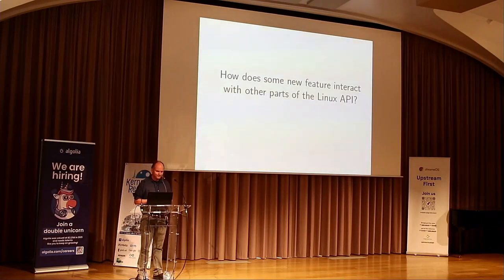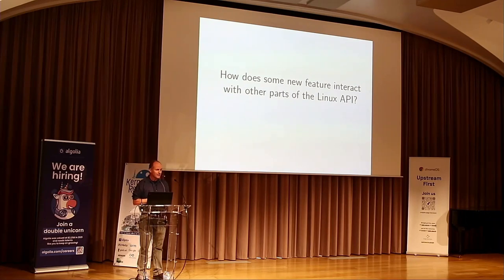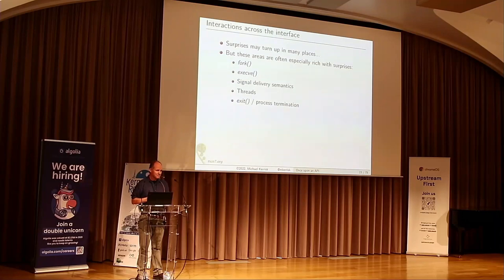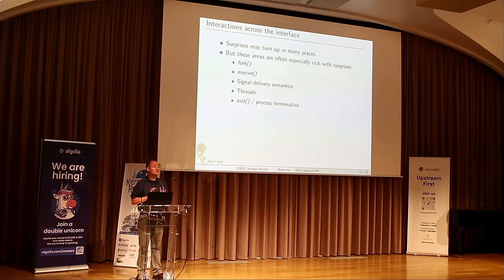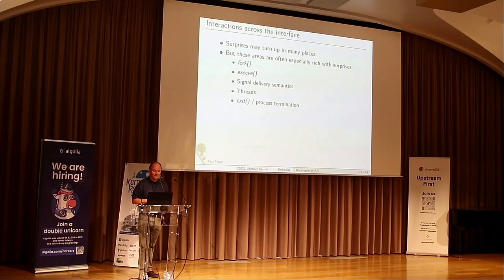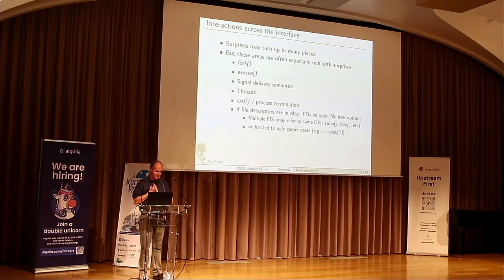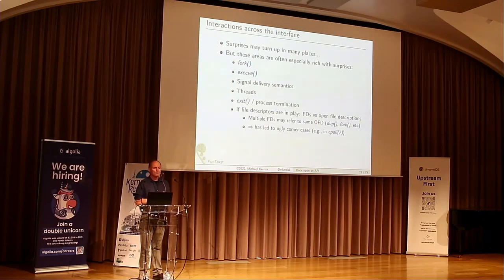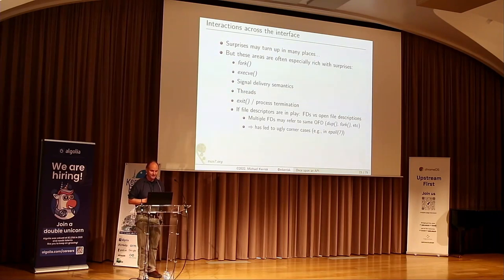What other things could go wrong? One of the things I find interesting is how some new feature interacts with other parts of the Linux API. You can find surprises in many places, but often certain areas are rich with surprises — in particular: creation of new processes, execution of new programs, threads, signals, signal delivery semantics, process termination. And if file descriptors are in play, that can be quite interesting too, because of the many-to-one relationship between file descriptors and open file descriptions.